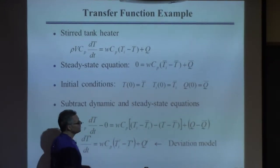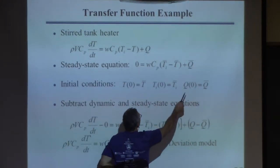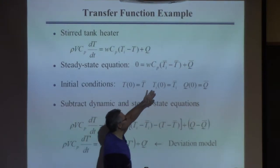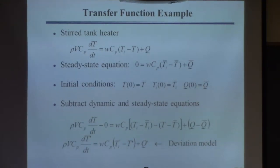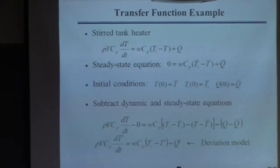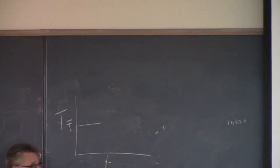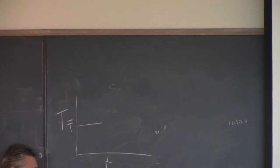The reason this idea of deviation variables becomes convenient will be shown here. What we're normally going to do is make this assumption: we start the system off at a steady state. So the initial value of Q is equal to its steady state value, and the initial value of the inlet temperature is its steady state value. You might imagine the situation where you have the temperature starting off at T-bar, and then you do something — change Q or the inlet temperature — and that will change the temperature.